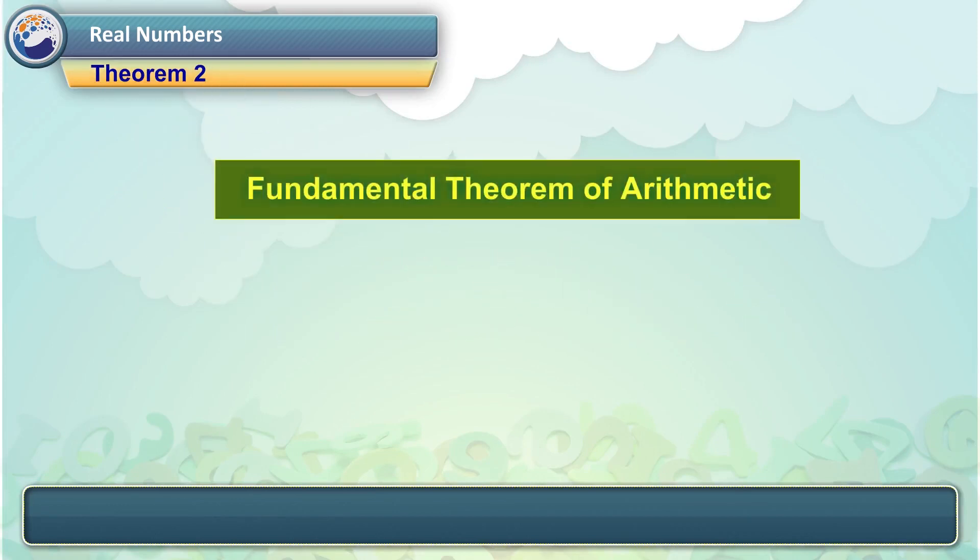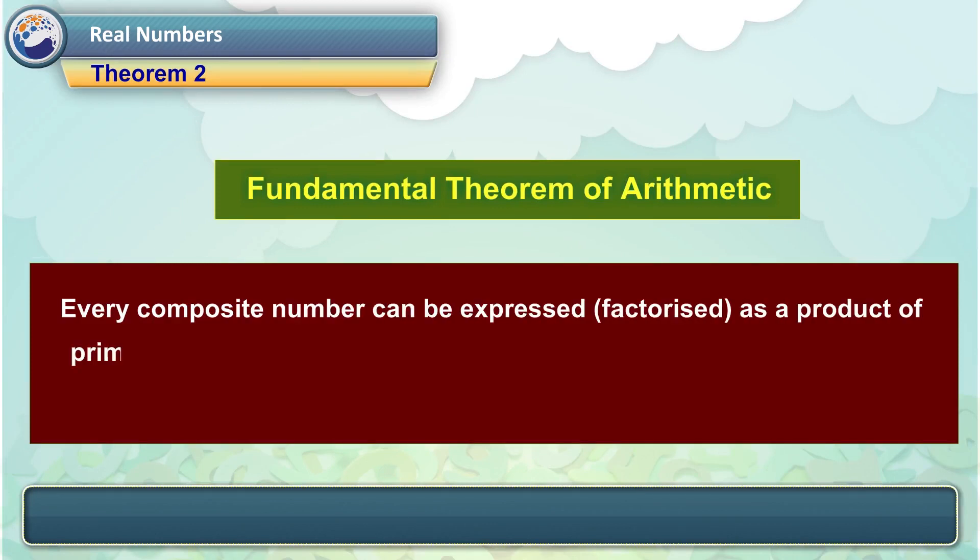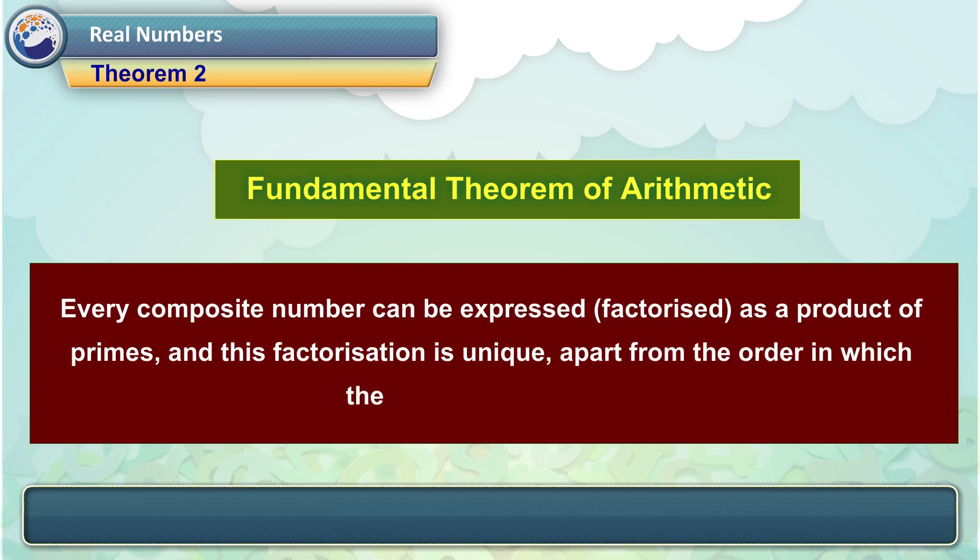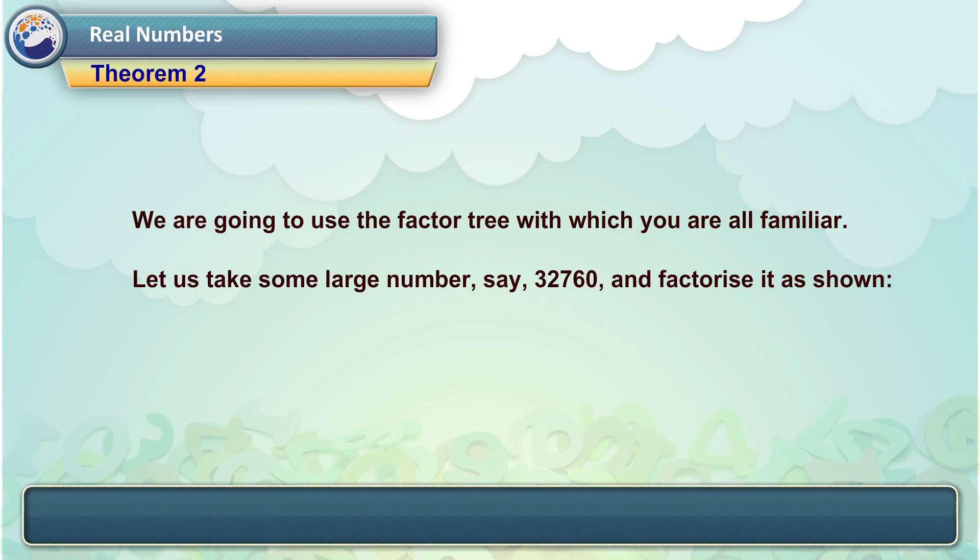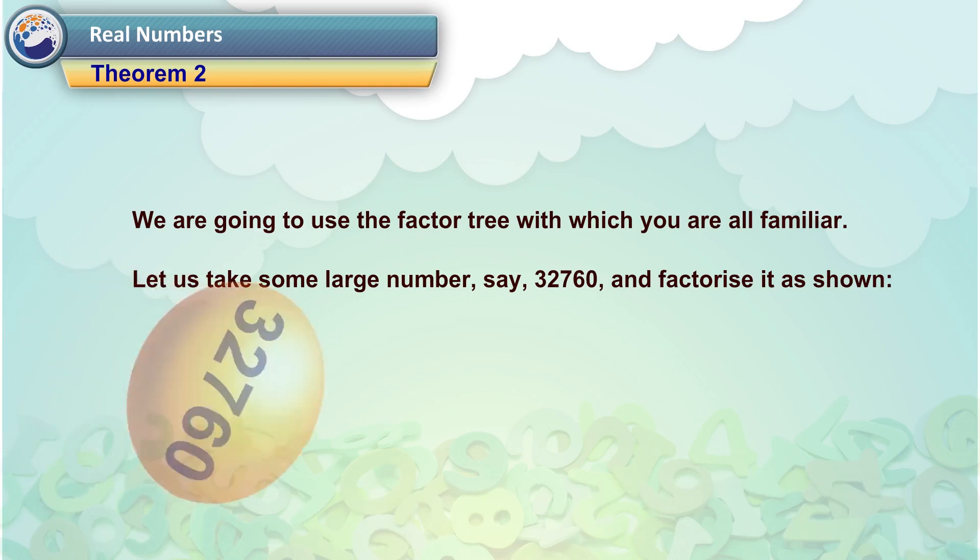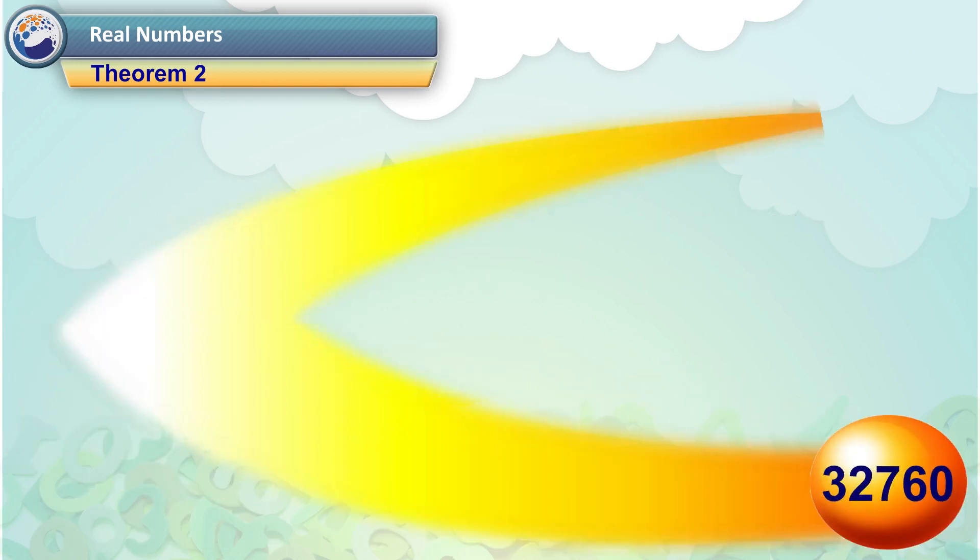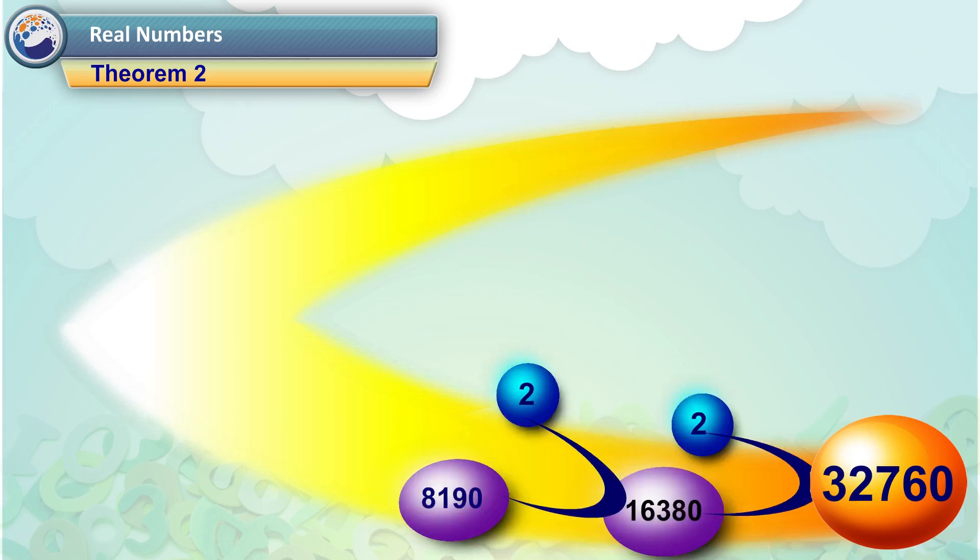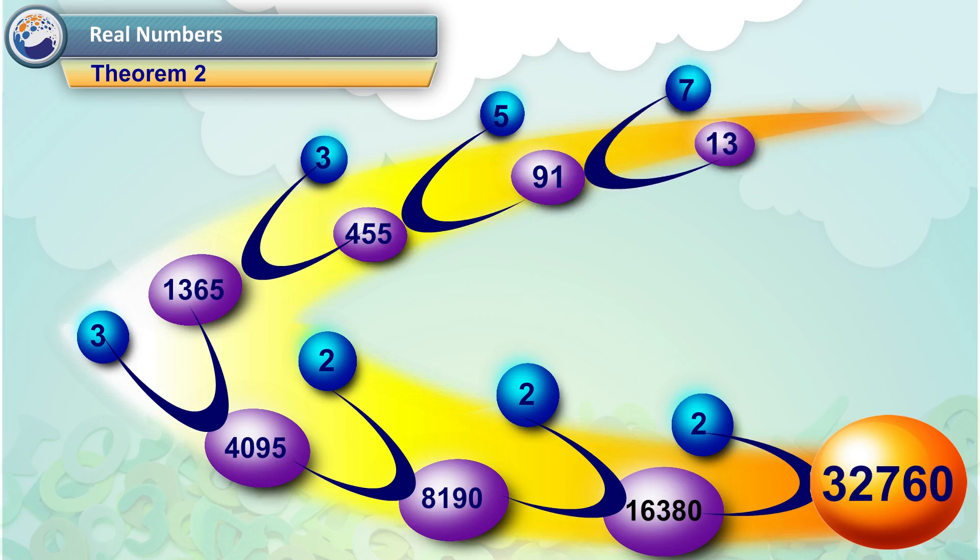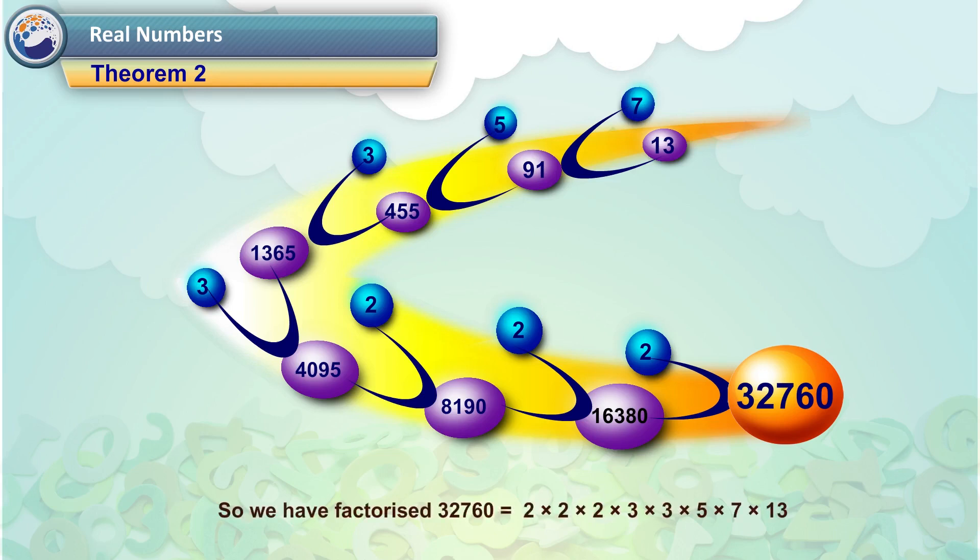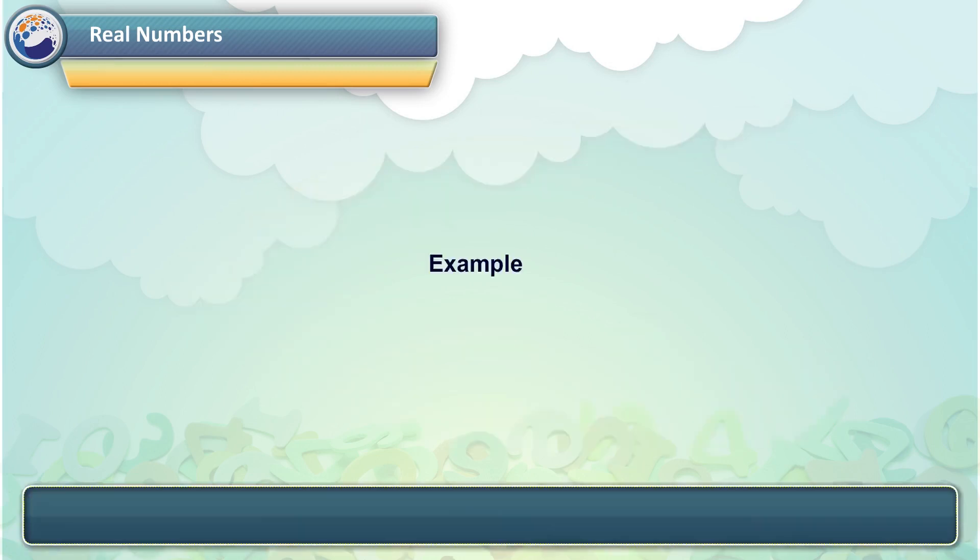Theorem 2. Fundamental theorem of arithmetic. Every composite number can be expressed, factorized as a product of primes and this factorization is unique apart from the order in which the prime factors occur. We are going to use the factor tree with which you are all familiar. Let us take some large number, say 32,760 and factorize it as shown. 32,760 is equal to 2 times 16,380. Further, 16,380 is equal to 2 times 8,190. Next, 8,190 is equal to 2 times 4,095. Factorizing all the composite numbers in such a way, we get the prime factors of 32,760 is equal to 2 into 2 into 2 into 3 into 3 into 5 into 7 into 13.